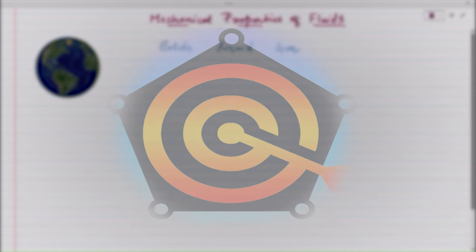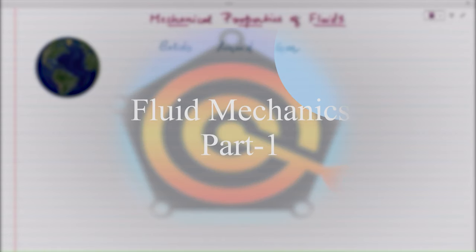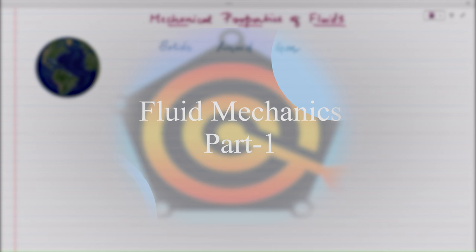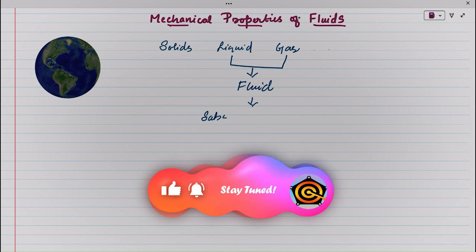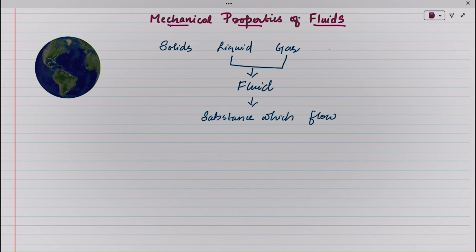Hello everyone. Today we are going to discuss the new chapter: mechanical properties of fluids in physics. We know that there are three states of matter — solid, liquid, and gases. Here, we are categorizing liquid and gas under a category called fluid. The substance which flows is called a fluid. That is, liquid and gas come under the category of fluid.